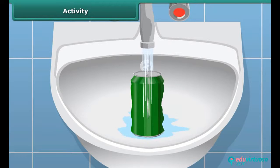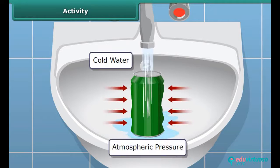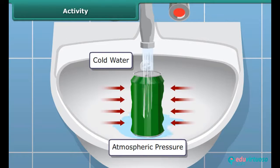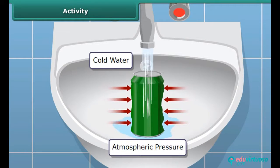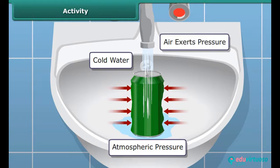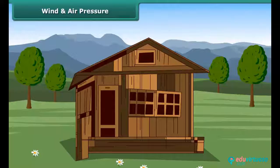Put the can carefully in a wash basin and pour water over it. What do you observe? The shape of the can gets distorted. As water is poured over the can, some steam inside condenses into water, which reduces the amount of air inside the can. Air pressure inside decreases, so the pressure from outside distorts the can. This shows that air exerts pressure.